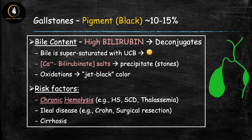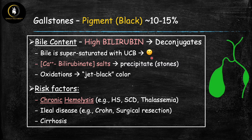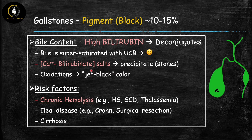Pigment gallstones are less common than cholesterol gallstones, and among the two types, black pigment stones are more common than brown. In black pigment stone formation, the bile has high bilirubin content that deconjugates, supersaturating bile with unconjugated bilirubin. Because it's not water-soluble, it forms salts primarily with calcium — calcium bilirubin salts — which crystallize and precipitate. These undergo oxidation, turning the pigment into a jet-black color, forming black pigment gallstones.